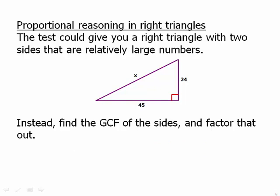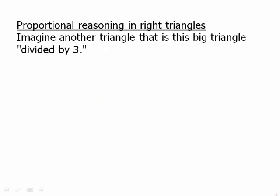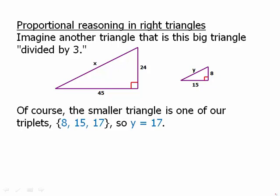Instead, find the greatest common factor of the sides and factor that out. The greatest common factor of 24 and 45 is 3. Think about it this way: suppose we scale down that triangle by a factor of 3. We have the large triangle, our starting triangle, and then we have a scaled down version with the unknown hypotenuse y. Well, of course, that scaled down version looks pretty good because that's actually one of our Pythagorean triplets. Of course, that's the 8-15-17 triplet. We don't even have to do any calculations. We can see instantly that y just has to equal 17.